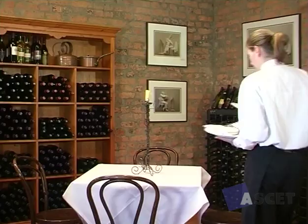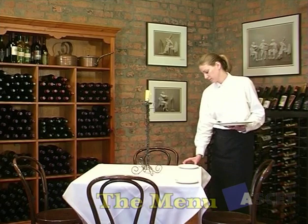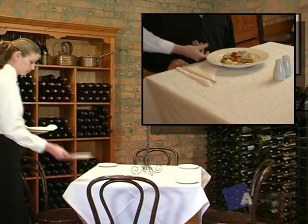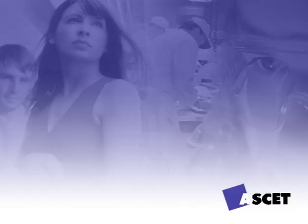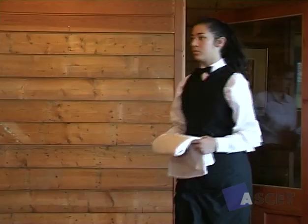Like the environment of a restaurant, the layout of a table depends on the style of a restaurant, the menu and the amount of time given to the setup procedure. Obviously, it would be inappropriate to lay out the table with chopsticks when the menu is Italian. However, be mindful that individual customers have special requirements, such as needing a fork and spoon because they can't use chopsticks. If your restaurant uses tablecloths and other coverings, you should be familiar with these and how they're used.